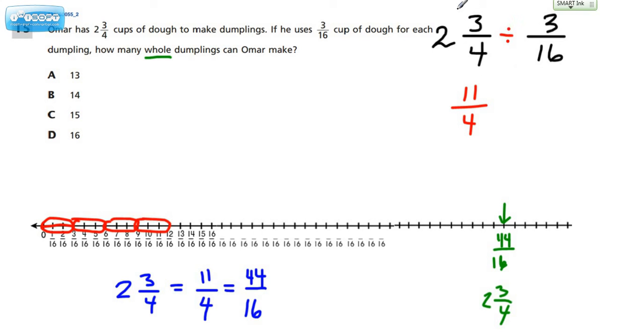And remember, we're going to think of keep, change, flip. We're going to change this to multiplication, and we're going to flip this to its reciprocal. And now we'll follow the rules for multiplying. If we have a common factor between a numerator and a denominator, we'll take advantage of that by dividing by that value. So in this case, the GCF of this number and this number is four. Four divided by four would give us one. Sixteen divided by four would give us four.